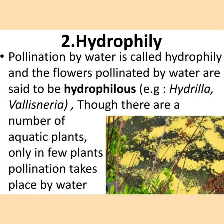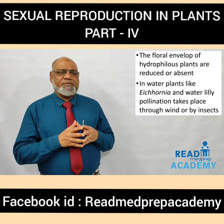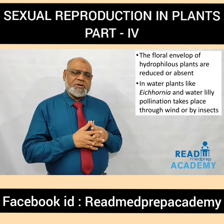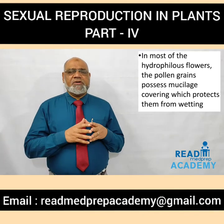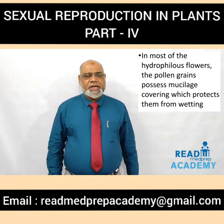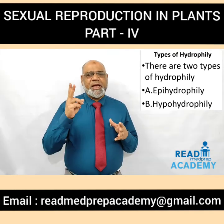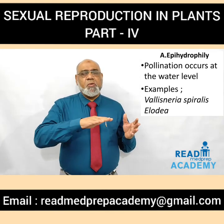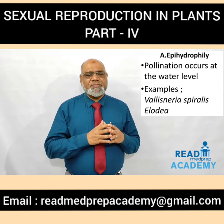What is hydrophily? Pollination by water is called hydrophily, and the flowers pollinated by water are said to be hydrophilous. Example: Hydrilla, Vallisneria. Though there are a number of aquatic plants, only in a few plants does pollination take place by water. The floral envelope of hydrophilous plants is reduced or absent. In water plants like Eichhornia and water lily, pollination also takes place through wind or by insects. In most hydrophilous flowers, the pollen grains possess a mucilage covering which protects them from wetting. There are two types: epihydrophily and hypohydrophily.